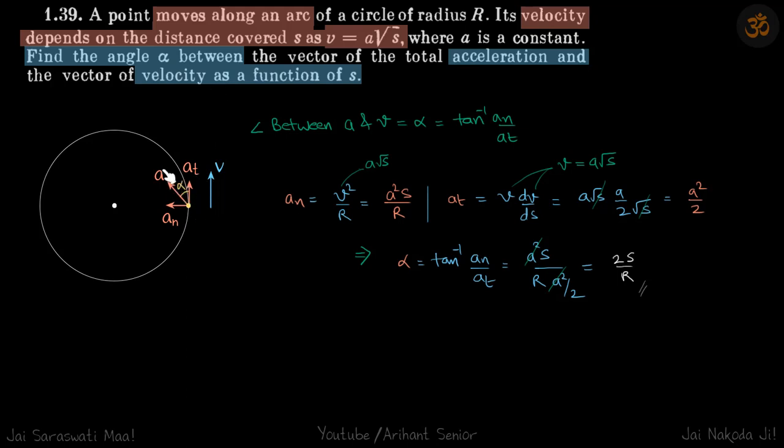And what is this α? That is tan⁻¹(aₙ/aₜ), right? So from here we got our approach: to calculate the angle α, we'll find aₙ and aₜ, and their ratio will give the tan of α.